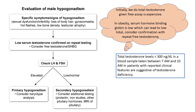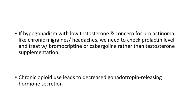Evaluating male hypogonadism begins with assessing specific symptoms and signs, followed by checking testosterone levels. If low serum testosterone is confirmed, further tests like LH and FSH are conducted to determine primary or secondary hypogonadism. In cases of obesity, serum hormone-binding globulin is low, necessitating free testosterone confirmation. In hypogonadism with concerns for prolactinoma, checking prolactin levels is essential; treatment involves bromocriptine or cabergoline rather than testosterone supplementation. Chronic opioid use can also lead to decreased gonadotropin-releasing hormone secretion, impacting testosterone levels.